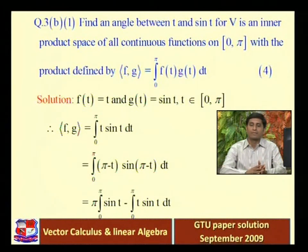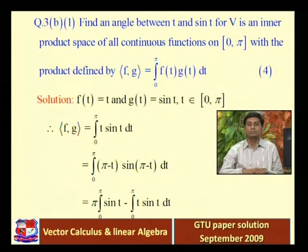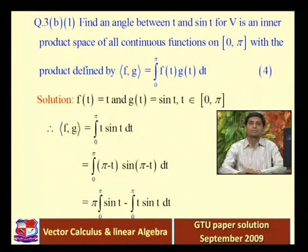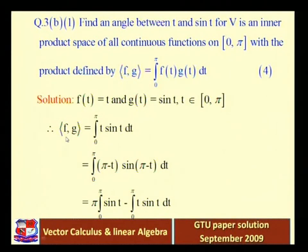We find ‖f‖ using ‖f‖² = <f,f>, and ‖g‖ using ‖g‖² = <g,g>. Then θ = cos⁻¹(<f,g> / (‖f‖·‖g‖)). First, inner product <f,g> = ∫₀^π t·sin(t) dt, since f(t) = t and g(t) = sin(t).